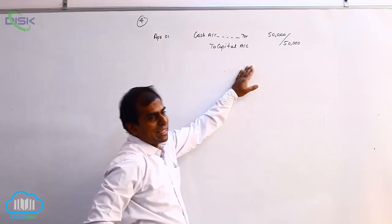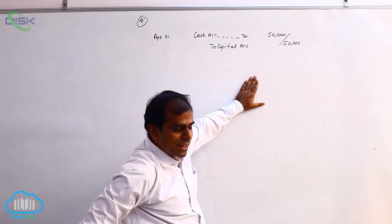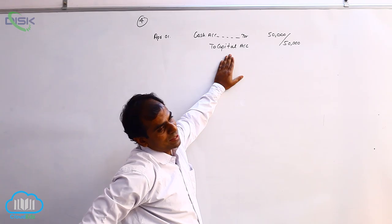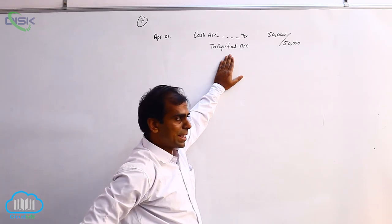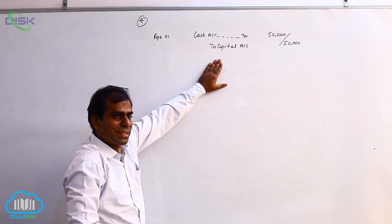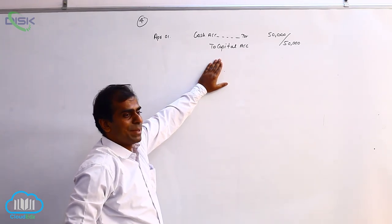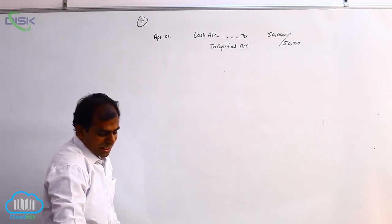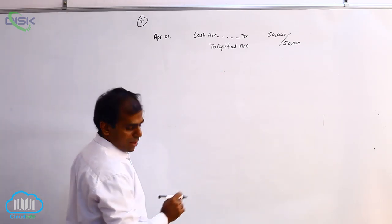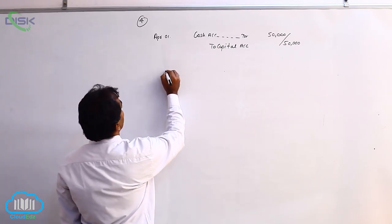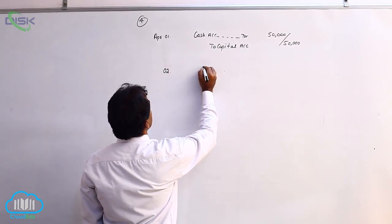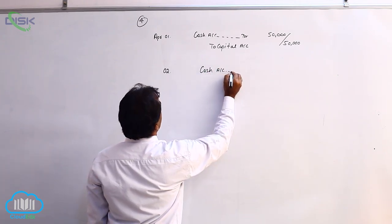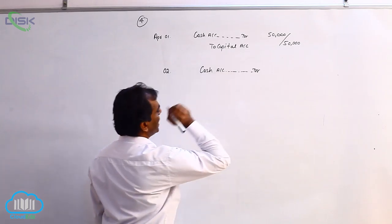We are debiting cash because the business is getting cash. Cash is a real account — debit what comes in. We are crediting capital because the owner is giving cash to the business; he is the giver. Whenever there is an owner, he gives the cash and we identify him with the name capital. Therefore, capital being a personal account, we are crediting it.